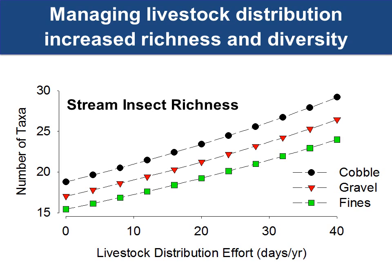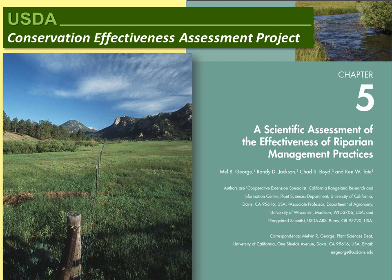These are model outputs from a negative binomial regression correlating livestock distribution effort in days per year with number of taxa — basically in-stream insect or macroinvertebrate richness. Whether the stream had fine cobble or gravel sediments had an effect, but overall there was a positive correlation between livestock distribution effort and richness. This agrees well with the CEEP assessment chapter, where Mel George, Chad Boyd, and Randy Jackson evaluated how effective these management practices are. We found very similar results reviewing the literature: riparian practices are effective if they're implemented correctly.